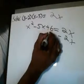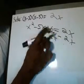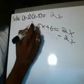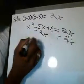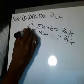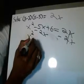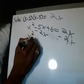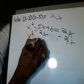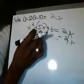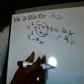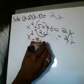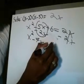Alright, now you do your minus 2x on both sides. This gives you a 0, so you're going to rewrite this as x squared minus 7x. When you combine your like terms, negative 5x and negative 2x is negative 7x, plus 6 is equal to 0.